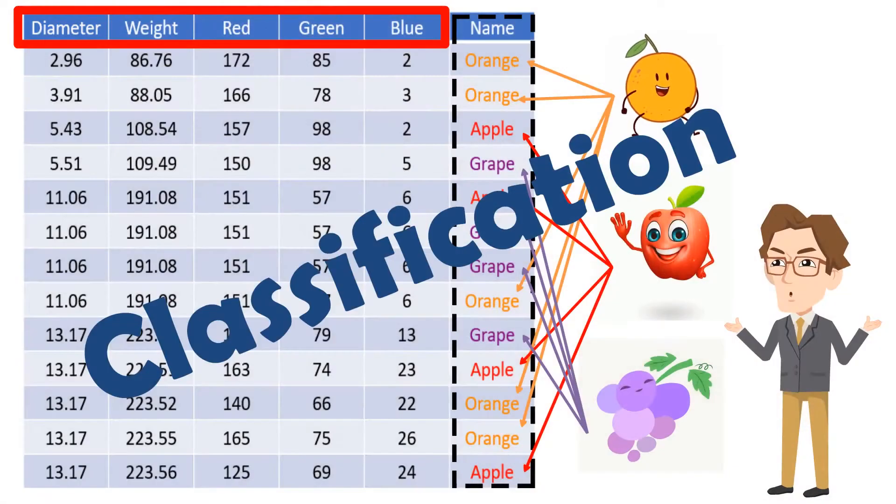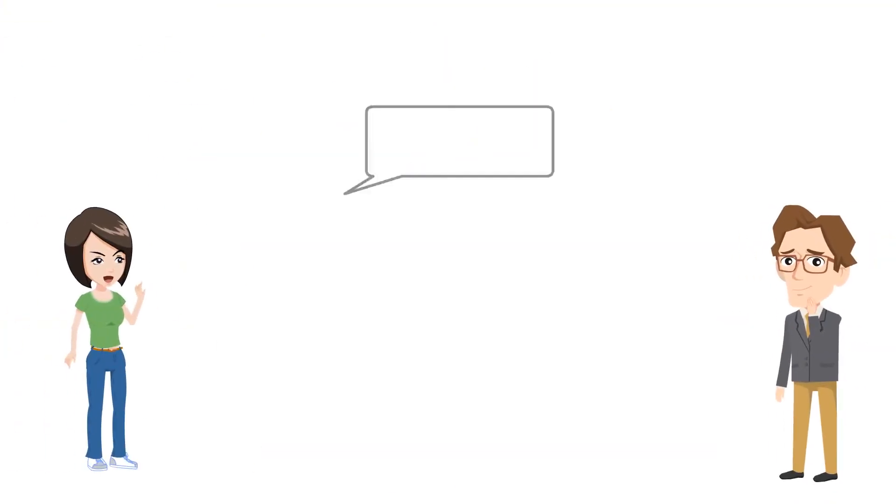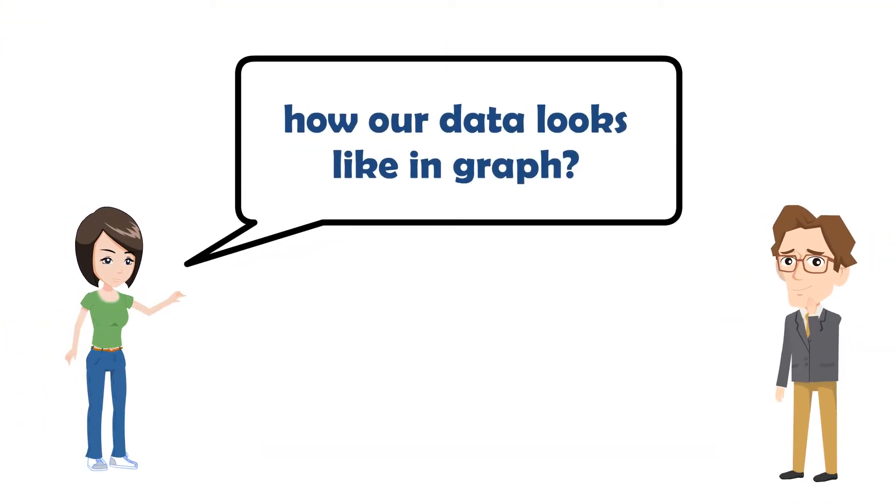This is how classification data looks like. But how does our data look in a graph?